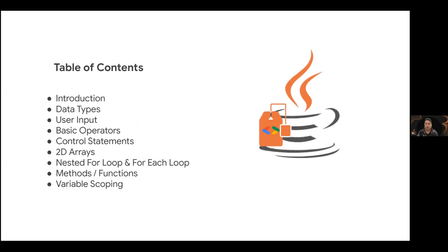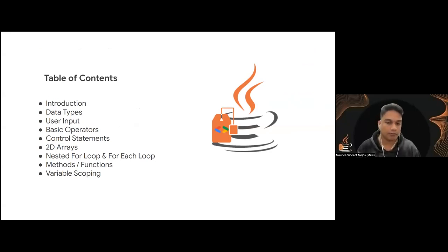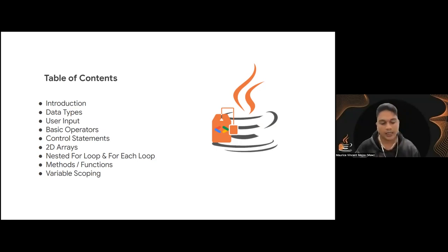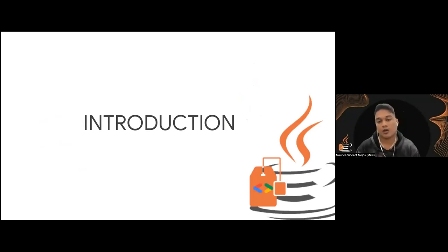Let's start with Java Start 2.0, the second version in which I followed the footsteps of Miss Joanna Butil. In this topic, we're going to talk about the basics of Java programming. We will cover: a simple introduction to Java, data types, user input, basic operators, control statements such as if, if-else, if-else ladder, and nested if. We'll also talk about 2D arrays or multi-dimensional arrays, nested for loops, for-each loops, methods, functions, arguments, parameters, and variable scoping.